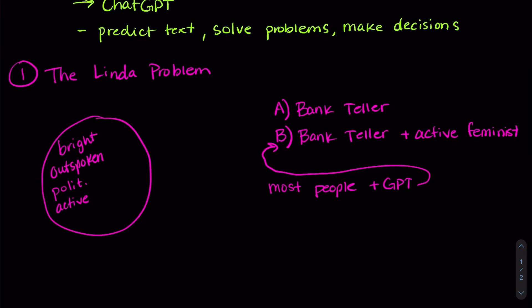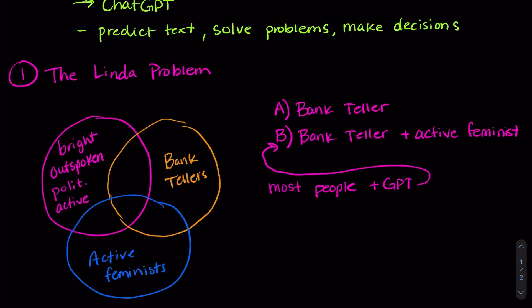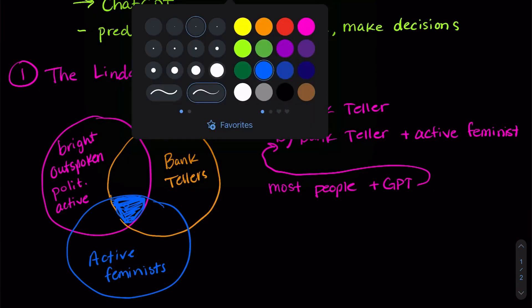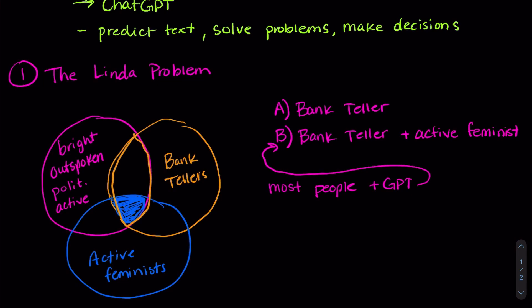Now most people and GPT choose the second one. The second one is not actually the most likely, because we can also look at all the people who are bank tellers and all the people that are active feminists. If we look at bank teller and active feminist with these characteristics of Linda's, this many people are going to represent those characteristics, whereas if we're just looking at Linda and bank tellers, we're looking at a lot more people. So it's actually more likely that Linda is just a bank teller.